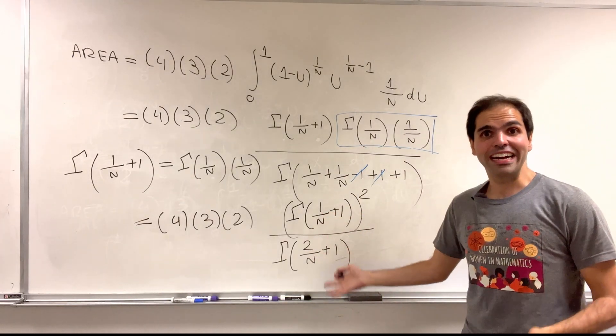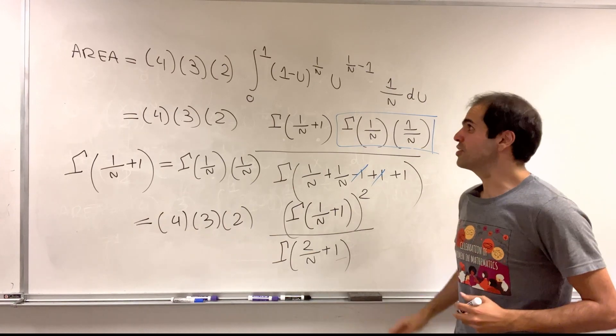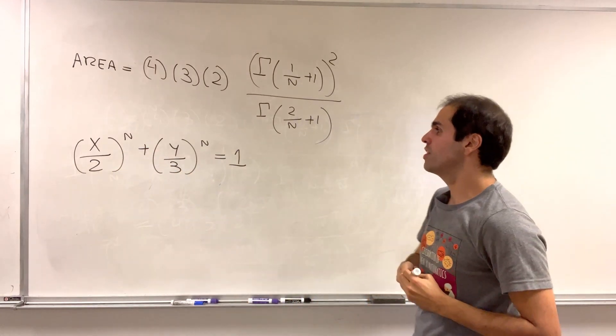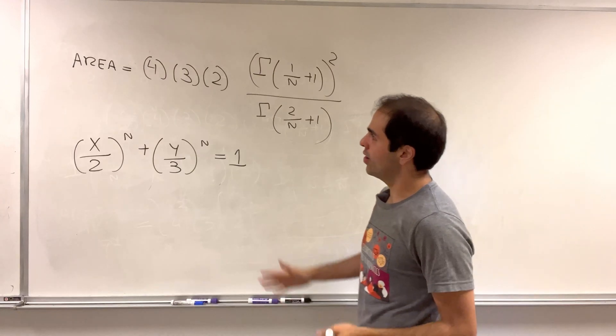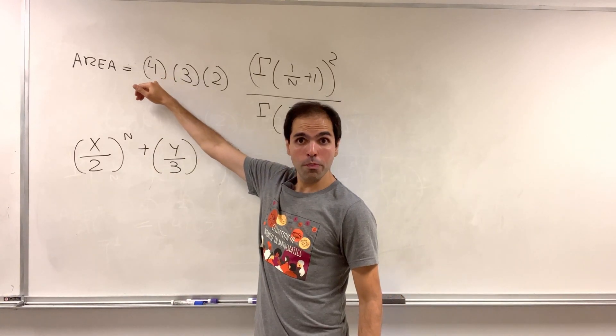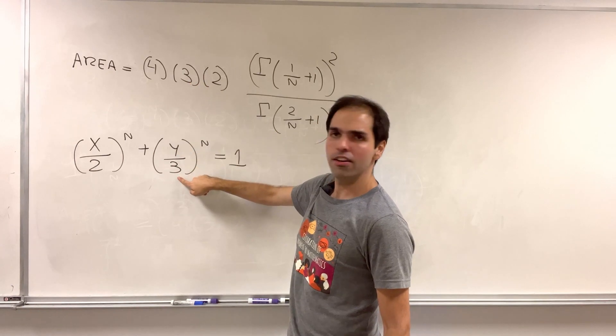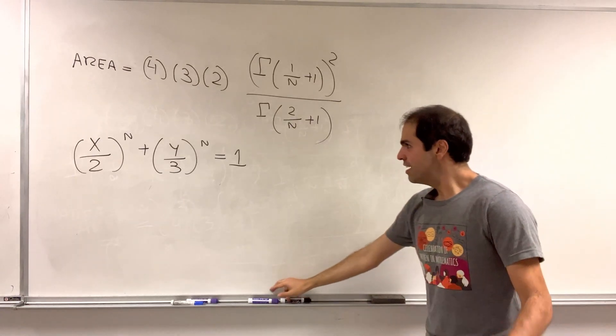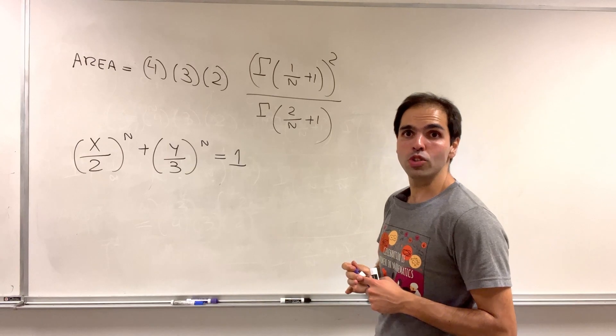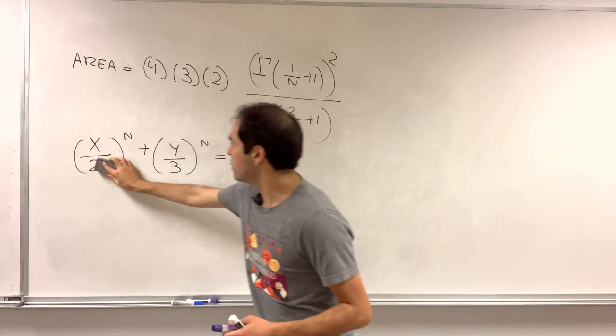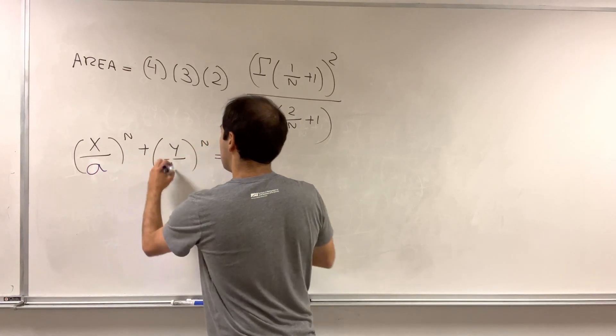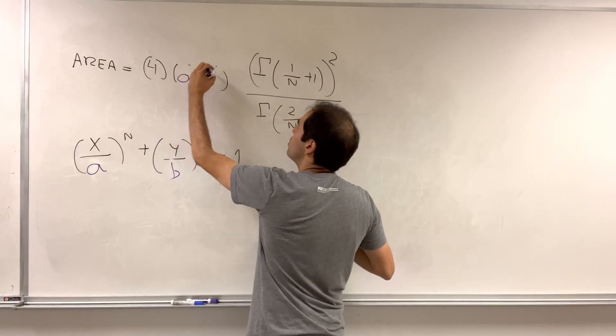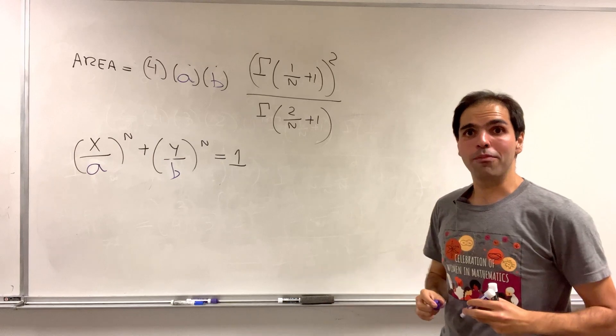That is the area of the super ellipse in terms of gamma functions. To recap, if you have a super ellipse x over 2 to the n plus y over 3 to the n equals 1, the area is 4 because of the 4 quadrants, 3 from that y, 2 from that x, times this gamma function. And of course there's nothing special about 2 and 3. If you have axes a and b, then the only thing you need to replace is this thing. So it's 4 times b times a, which is the same thing as a times b times this gamma function.